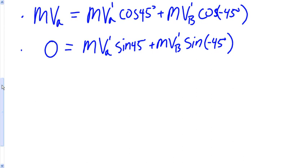So, I'm going to set that to equal M V A prime sine 45 equals. I'm going to bring the negative out and then subtract it over so the negatives cancel. So, M V B prime sine 45.